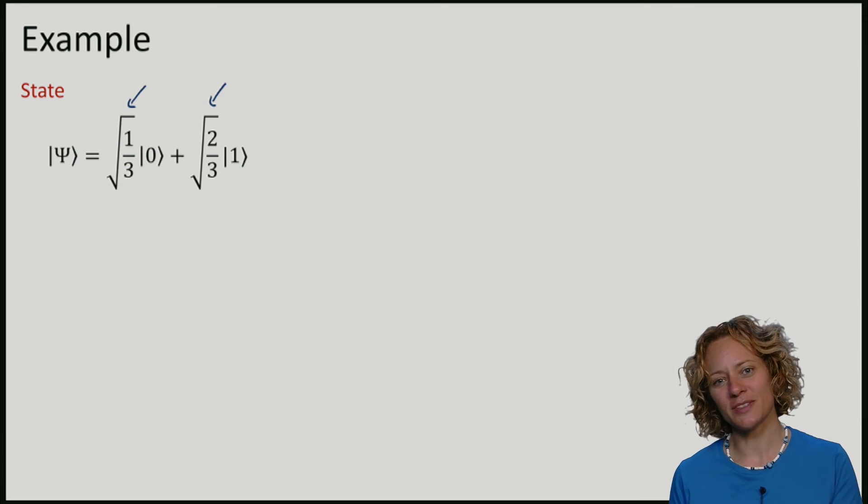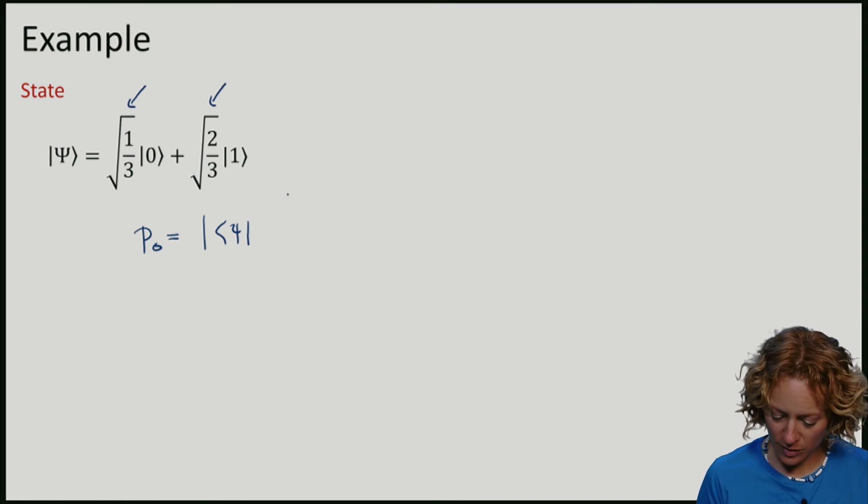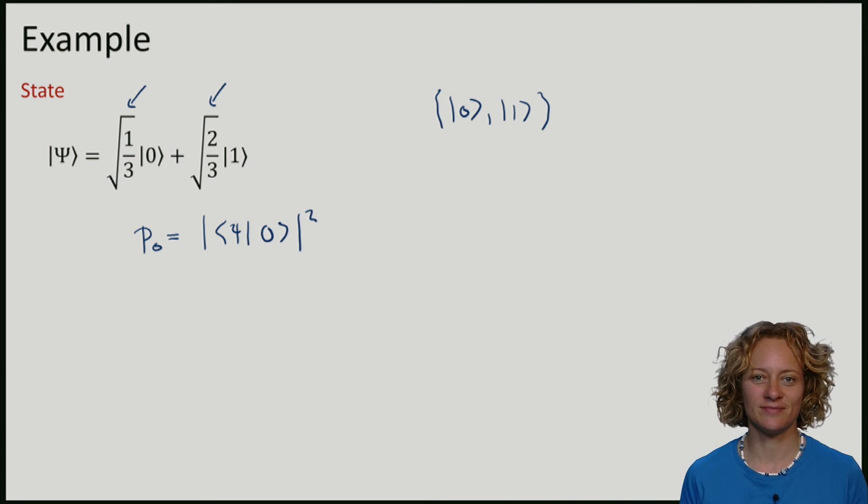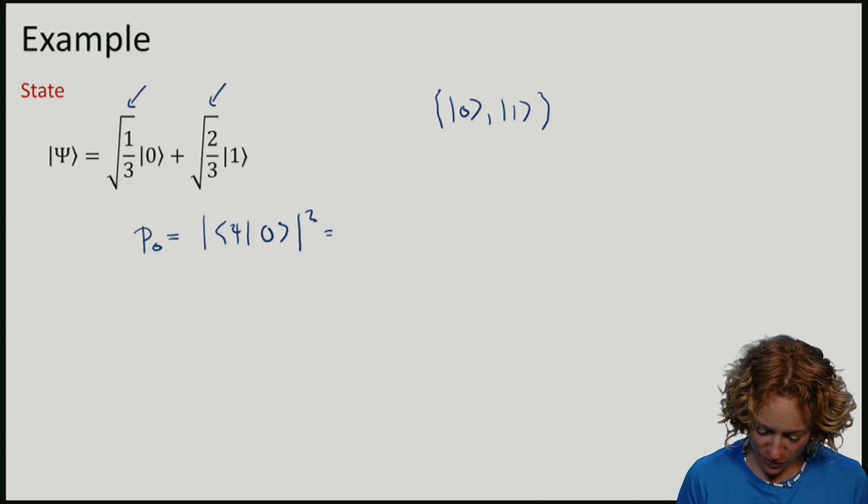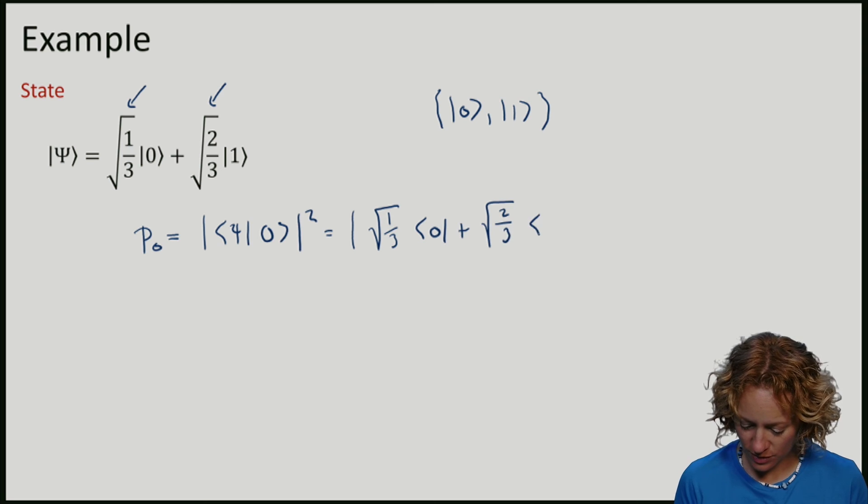Let's apply the rule to compute the probability that when I measure in the standard basis, I get outcome 0. So let me take psi, and here I will measure in the standard basis, which is again just the basis, but I will choose it here for convenience. And then apply the rule of computing psi with the basis element. So in our example, we can compute this quite simply. It's 1 over 3 with 0, 2 thirds times 1 with the 0 state.